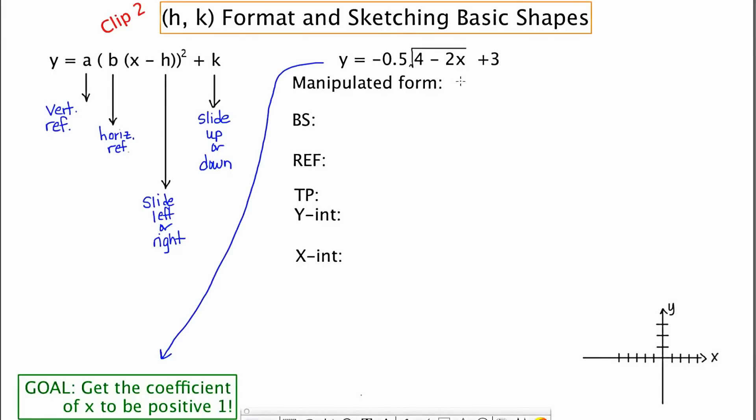So to do that, I'm going to start by just flipping the 4 and the negative 2x. So I'm going to say negative 1/2 square root of negative 2x plus 4 and then plus 3 on the outside. So you'll notice the x is on the left under the radical. And over here at the template, the x is also on the left. And again, it's our goal to get it to look as close to the template as possible.